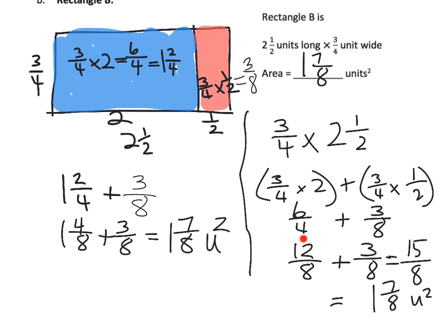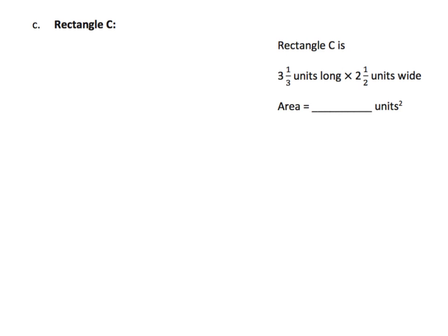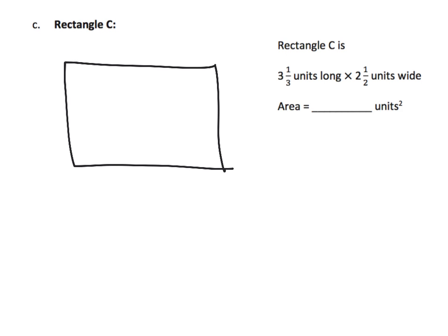For the next problem, draw your rectangle — don't worry about proportions. Here is three and one-third, and here is two and a half. You can see there are four areas to find, so we'll combine the multiplication and area together.